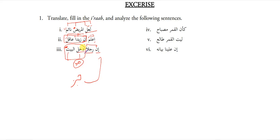Ka'anna — it's also huruf-e-mushabbabil fail. So al-qamara has Fathah, misbahun has Zammah. Ka'anna al-qamara misbahun. It's better to translate in the present: the moon is like a light.